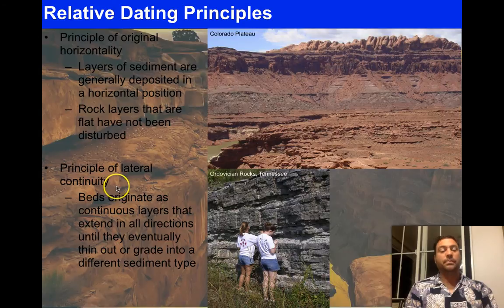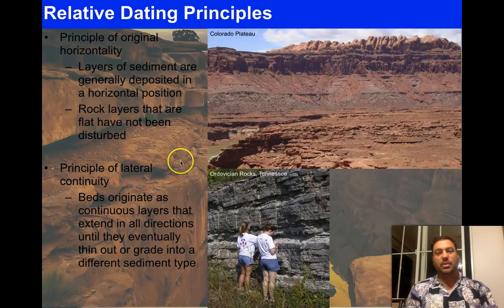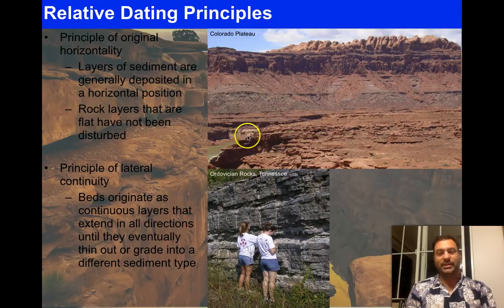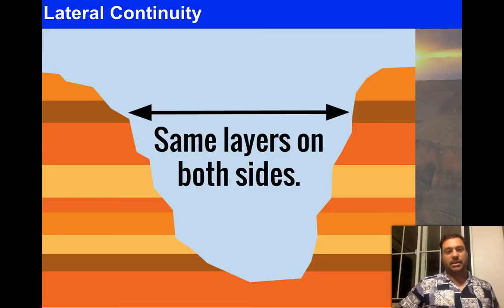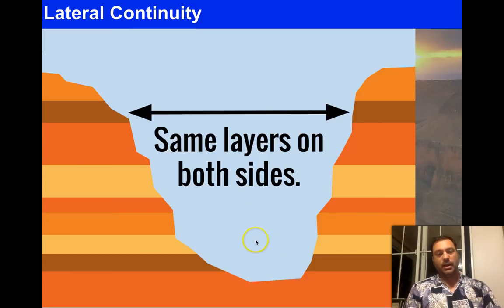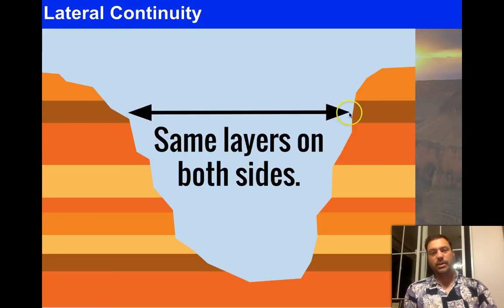The principle of lateral continuity: beds originated as continuous layers that extend in all directions until they thin out or grade into a different sediment type. Rocks on one side of a gully are probably the same rocks on the other side — they were continuous at one point. Here we see that originally a rock layer extended across a valley, and when a glacier or river carved this valley out, it left the layer on both sides. At one point it was continuous.